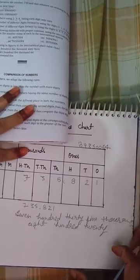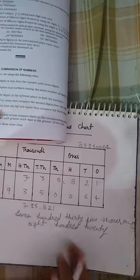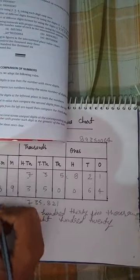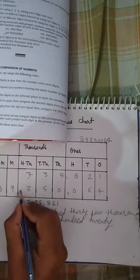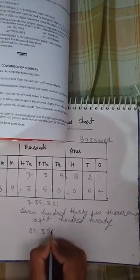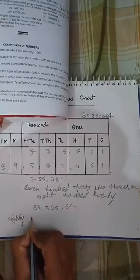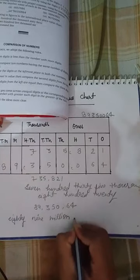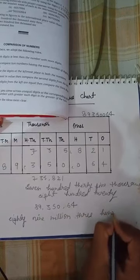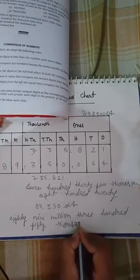Let's look at another number — the 5th example. Here we have the number 89350064. Placing it in the international place value chart, it becomes 89,350,064, which is eighty-nine million, three hundred fifty thousand, and sixty-four.